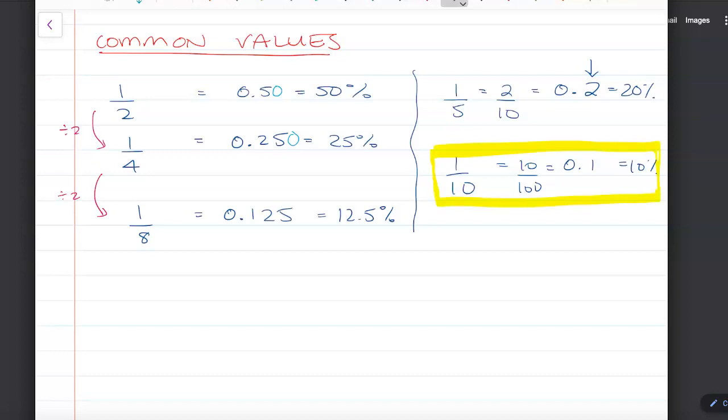One of the last ones I want to consider is one third. One third is 0.3 recurring, one of our recurring decimals—0.333 and it keeps going. If we want this as a percentage, we multiply by 100 to get 33.3333 percent. We can use a line to show it recurs or simply write it as the fraction one third.